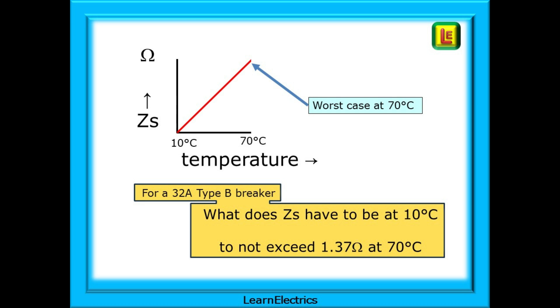As a conductor temperature increases the resistance of the conductor will also increase by a small amount per degree.